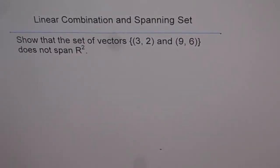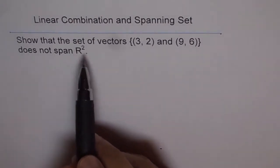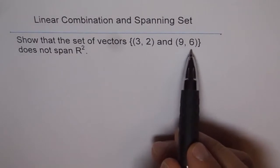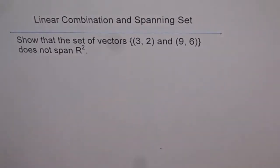Let's try to understand what is a spanning set and what set of vectors can be used as a spanning set. The question here is: show that the set of vectors [3, 2] and [9, 6] does not span R2.